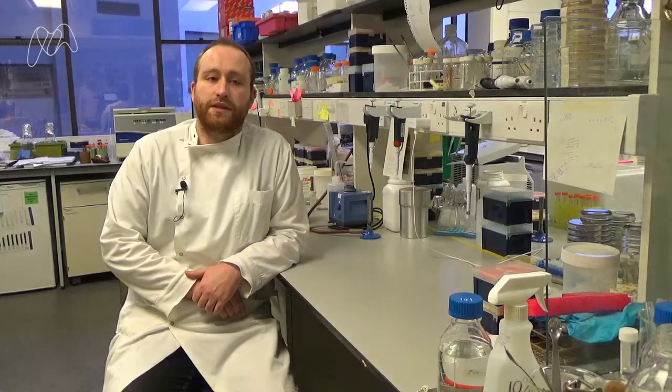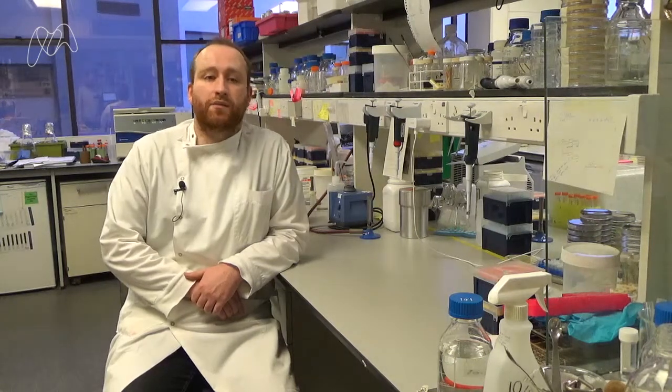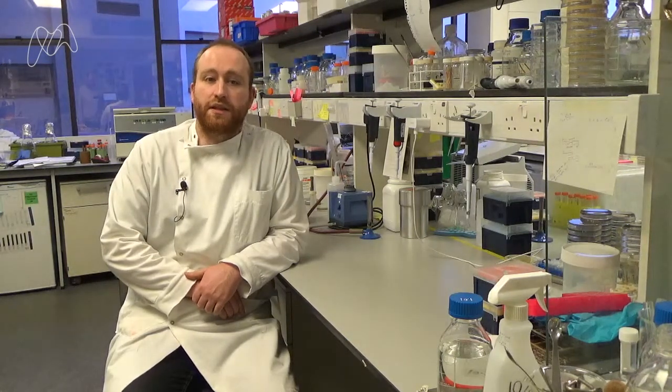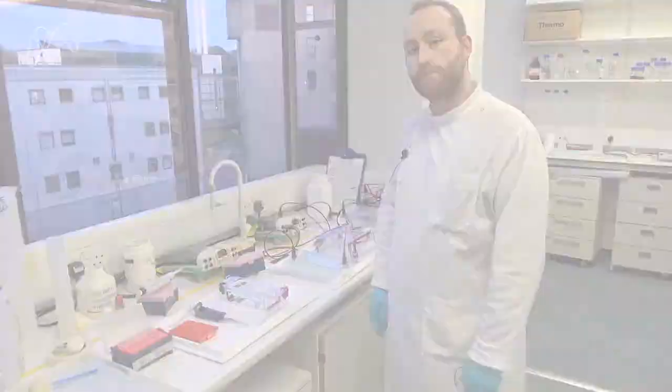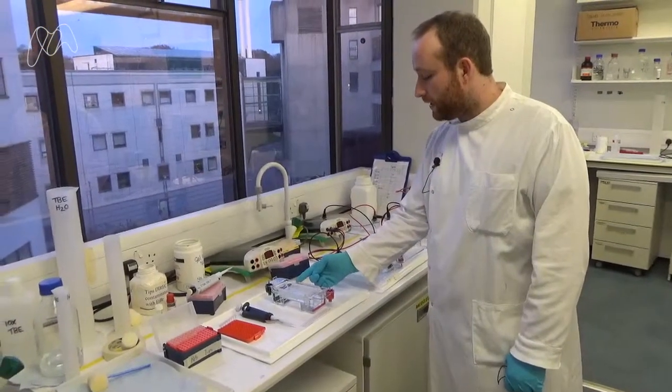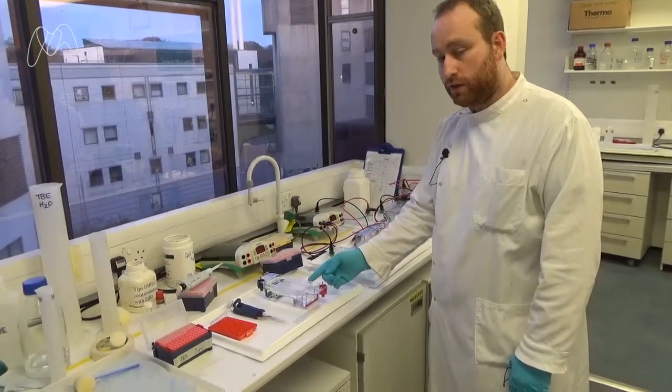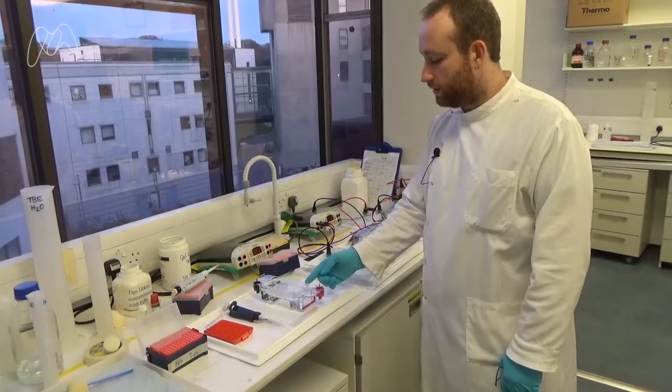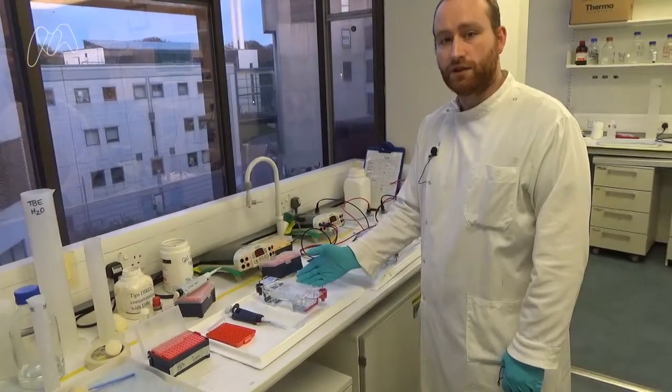To do this, we need to run something called gel electrophoresis. Now this sounds complicated, but the key thing to understanding this process is that as a molecule, DNA has a negative charge. So when we apply an electric current, the DNA will move from the negative electrode to the positive electrode. Smaller pieces of DNA will move faster, so we can separate the DNA based on its size.